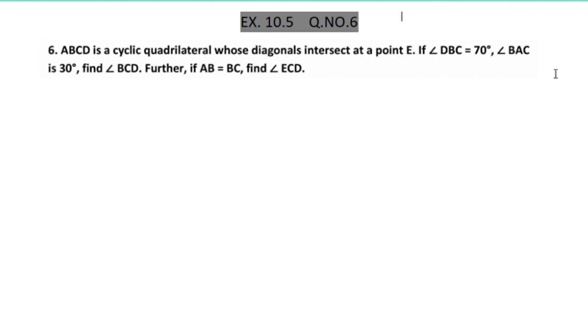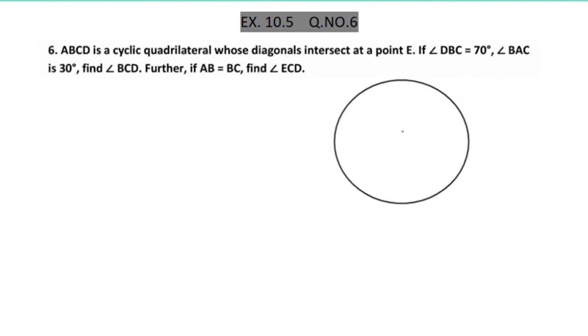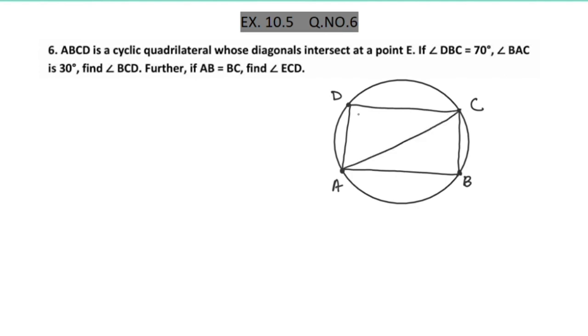ABCD is a cyclic quadrilateral whose diagonals intersect at point E. A cyclic quadrilateral has 4 vertices. I will mark the four points. We will have a cyclic quadrilateral whose diagonals intersect at point E, since the diagonals will intersect here. AC and BD are the two diagonals that intersect at E.